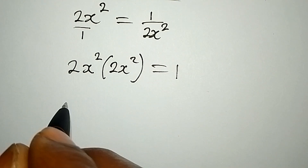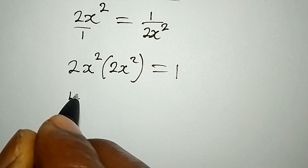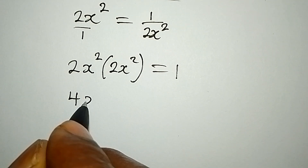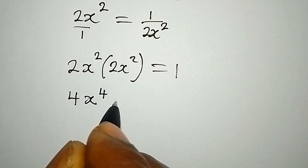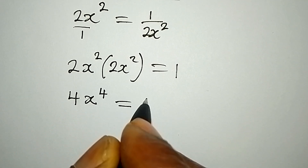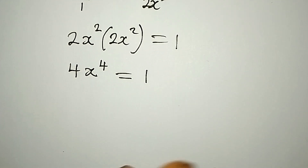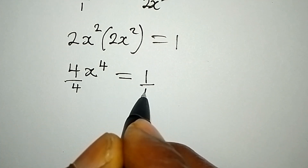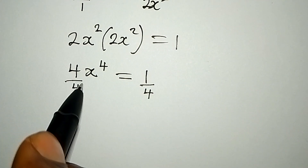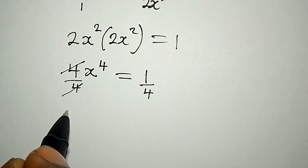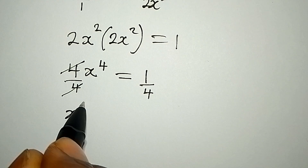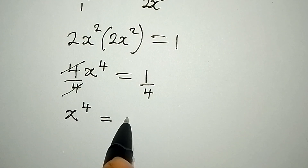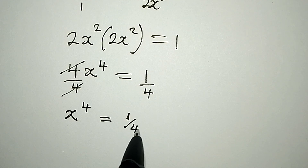Now 2 times 2 will give us 4, and x squared times x squared will give us x to the power of 4, and this is equal to 1. At this point we divide both sides by 4, so x to the power of 4 is equal to 1 over 4.